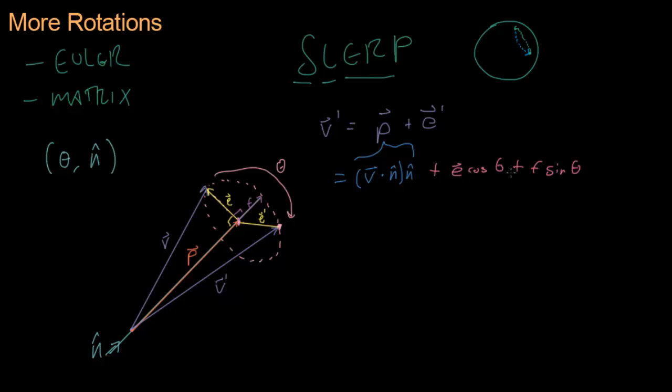This should look familiar to you by now, cosine theta and sine theta, giving us a rotation of a vector. And we know what E and F are, we can calculate E and F pretty easily.